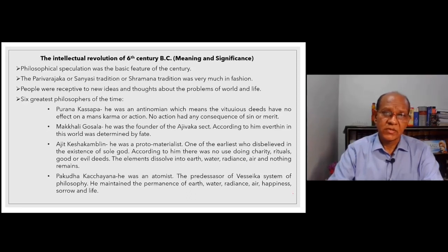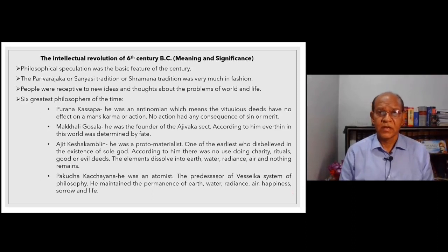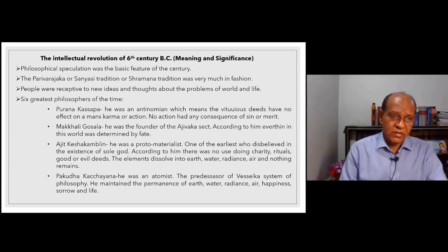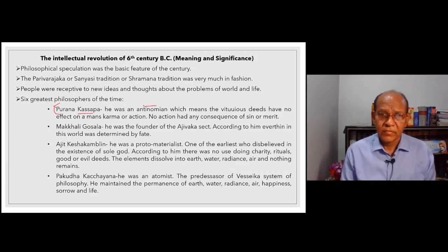One interesting aspect of this intellectual revolution was that many Kshatriyas, many princes, after leading the life of luxury would develop a tendency to become monks or sanyasis. Buddha and Mahavir were two such stalwarts. According to the literary tradition, there were six greatest philosophers of the time. They were Puran Kasap, who was an antinomian, which means that virtuous deeds have no effect on people's karma or action.